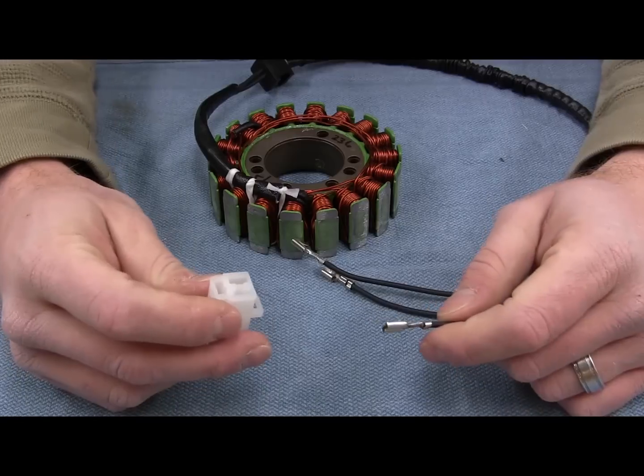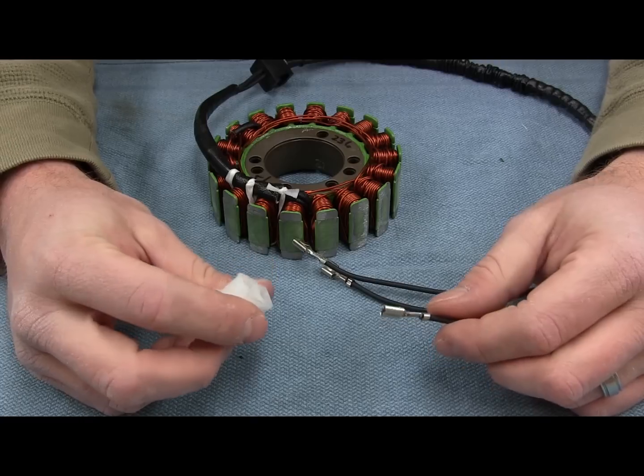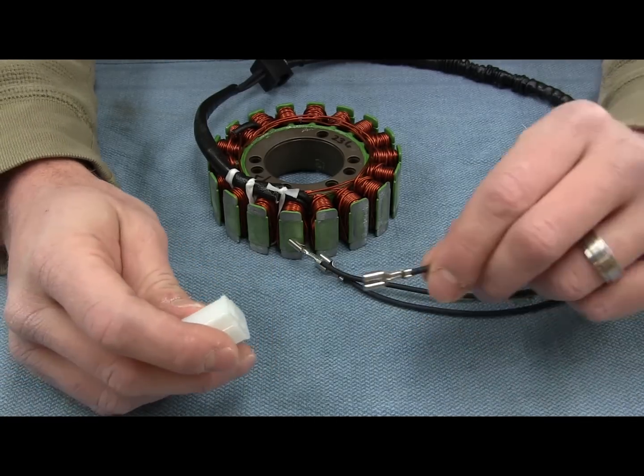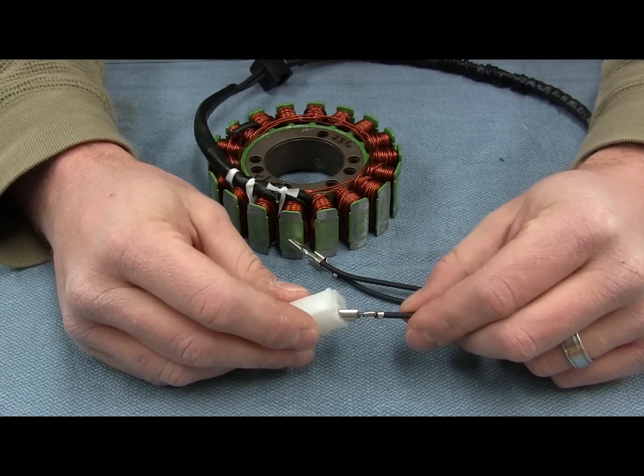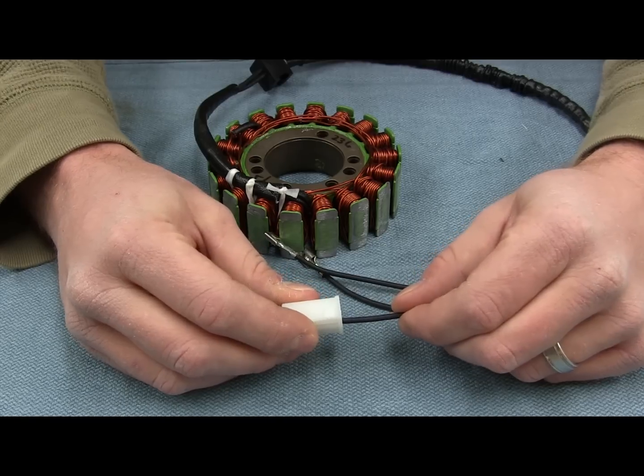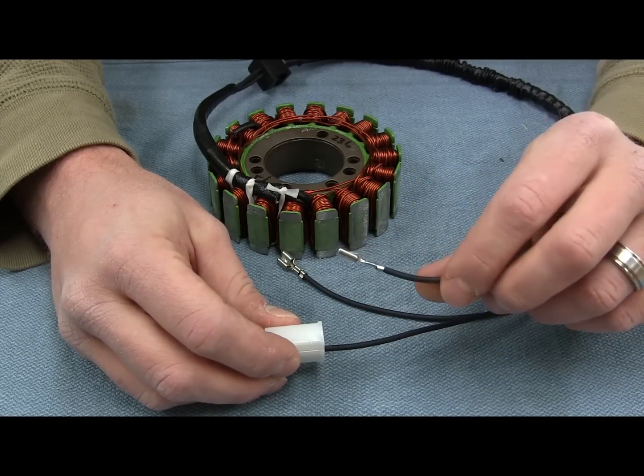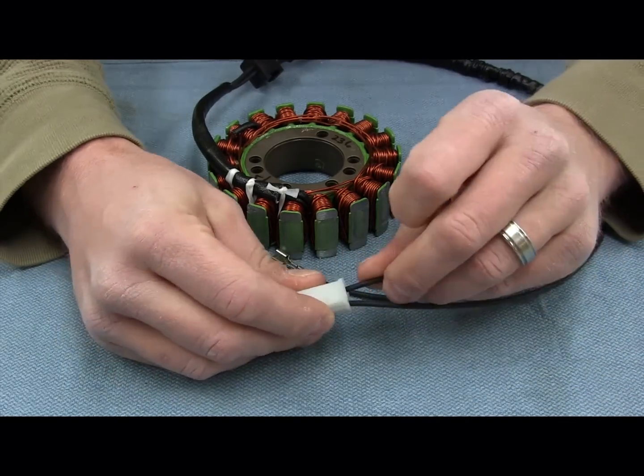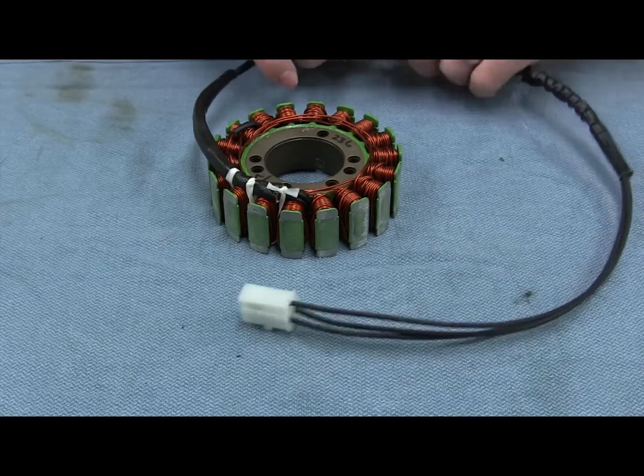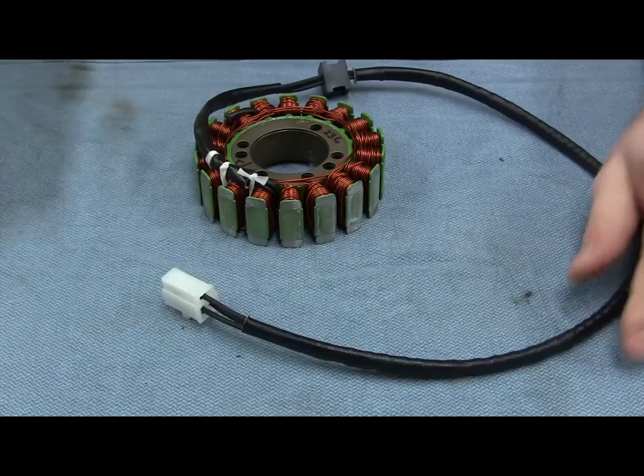Now we just have to slide the terminals into the connector. Be sure to consult your diagram that you took to make sure you're putting them back in the right order. This is fairly straightforward. The terminals only slide into the connector one way from the back. So you're going to gently insert the terminal into the connector until you feel the locking tab click. Give it a little pull to make sure it's in there securely. And go ahead and repeat that for the rest of your terminals. Okay, now we got them all in there. Just want to slide the sheathing back. And you're ready to go.